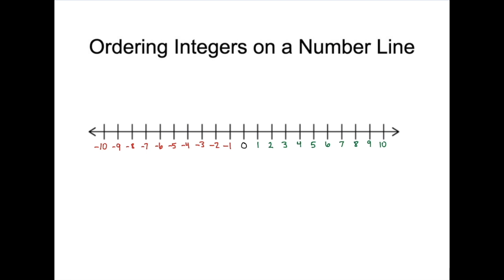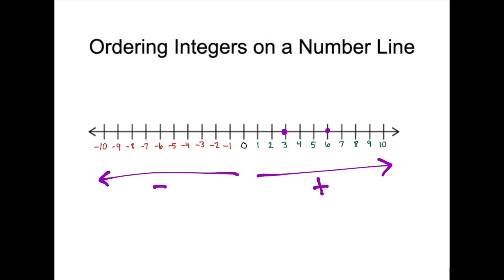When you have a number line, the numbers to the right of zero signify positive numbers, and the numbers to the left of zero signify negative numbers. The farther you are to the right, the larger the number. For example, if we have 3 and 6, 6 is larger than 3 because it's farther to the right. The farther left a number is, the smaller the number is. Think: left means less. So if I had negative 2 and negative 5, negative 5 is less because it's farther left. Notice that the larger the negative number, the smaller it actually is.